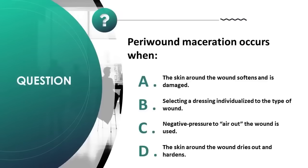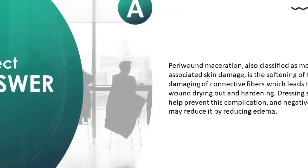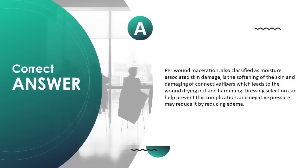Peri-wound maceration occurs when: A) the skin around the wound softens and is damaged, B) selecting dressings individualized to the type of wound, C) negative pressure to air out the wound is used, D) the skin around the wound dries out and hardens. Correct answer is A. Peri-wound maceration, also classified as moisture-associated skin damage, is the softening of the skin and damaging of connective fibers. Dressing selection can help prevent this complication, and negative pressure may reduce it by reducing edema.